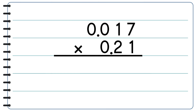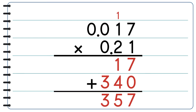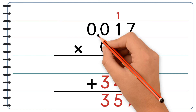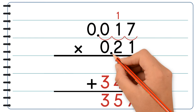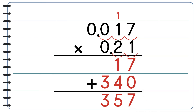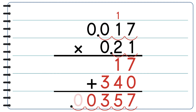Let's do another example: 0.017 times 0.21. We use the place value method again because the factors are way too small. First we multiply. Now we have to figure out where we're going to put the decimal point. We count the digits after the decimal point in each factor and add them up: 1, 2, 3, 4, 5. We have 5 digits, so we move the decimal point to the left 5 times and put zeros in the empty spaces.